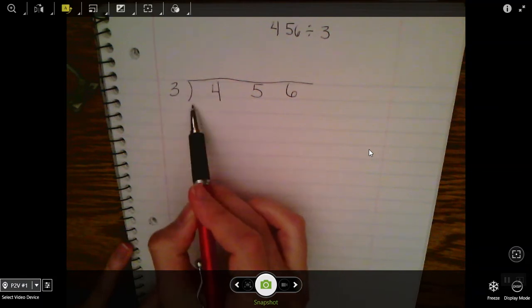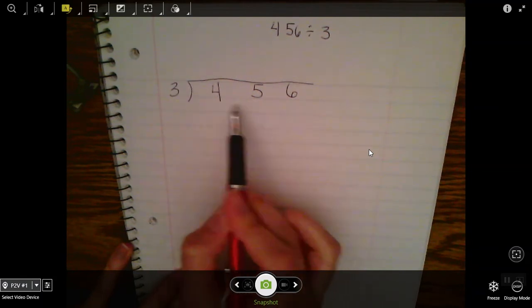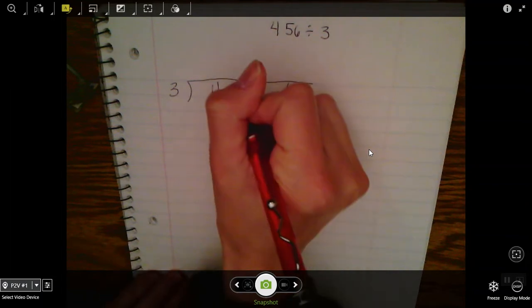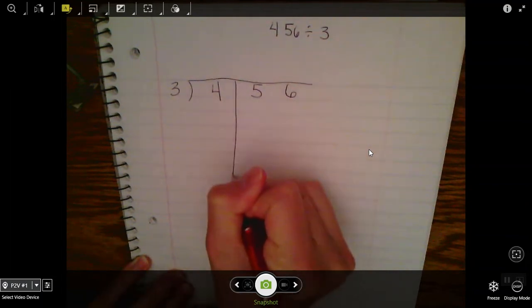My 3 goes on the outside, my 456 goes on the inside of the bracket. I'm drawing lines down the middle just to kind of divide that up.